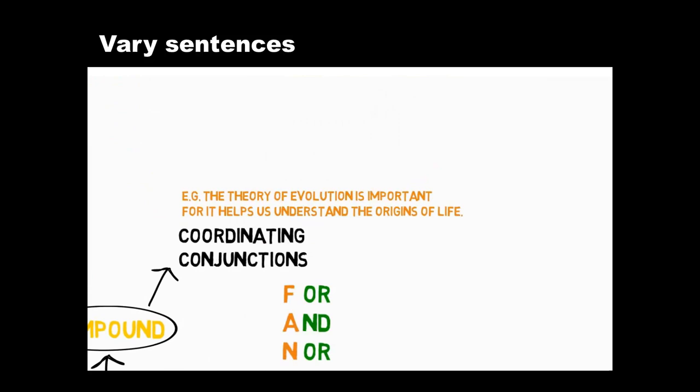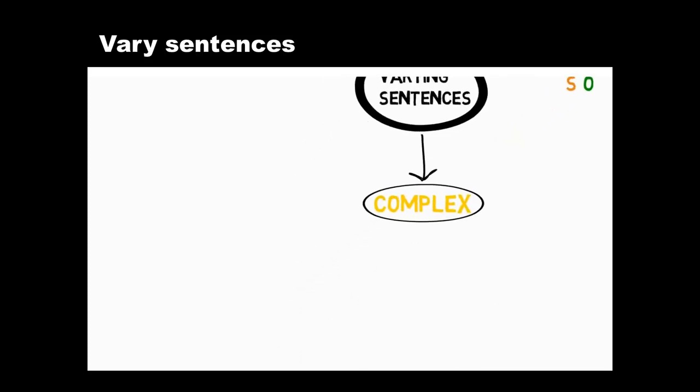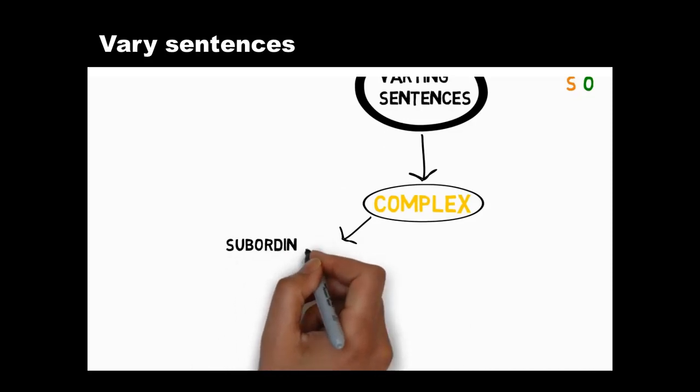As we've seen, compound sentences add variety to your writing. Another way to vary your sentences is to create complex sentences to express more complex relationships between ideas. There are three main techniques for creating complex sentences.